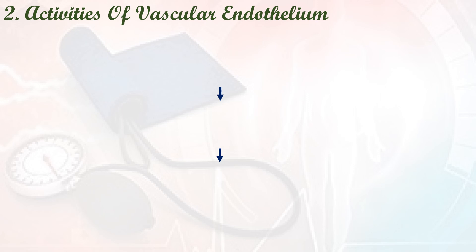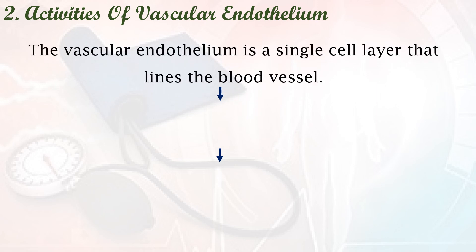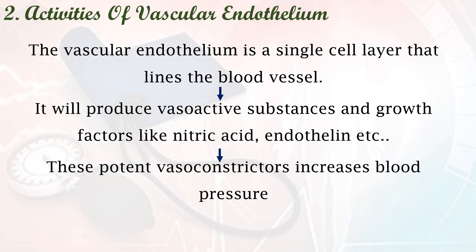The second mechanism is activities of vascular endothelium. The vascular endothelium is a single cell layer that lines the blood vessels. It produces vasoactive substances and growth factors like nitric oxide and endothelin. These potent vasoconstrictors increase blood pressure.